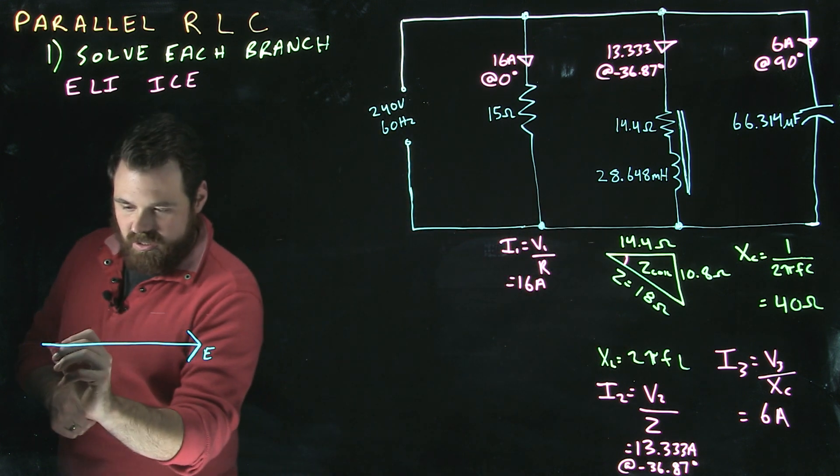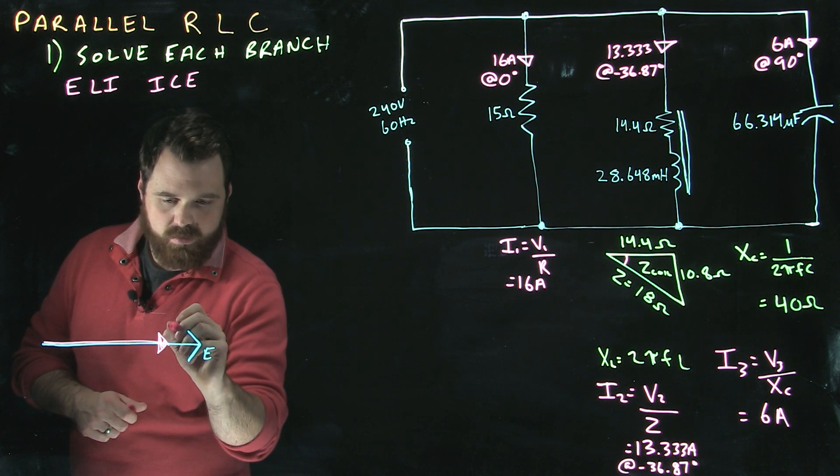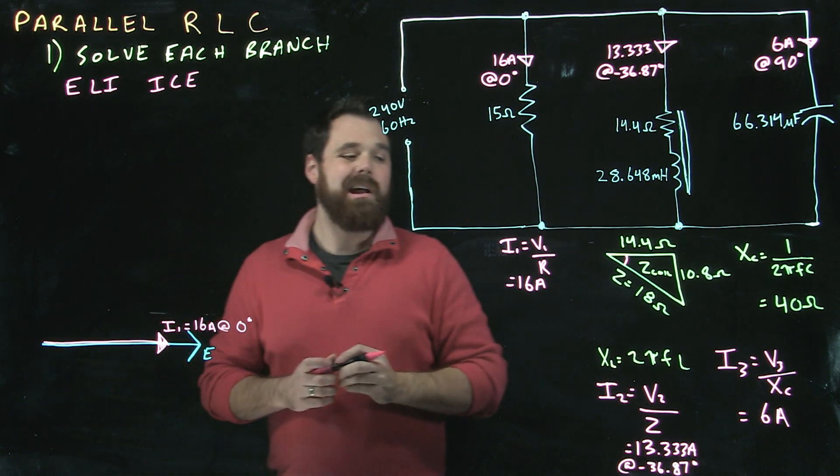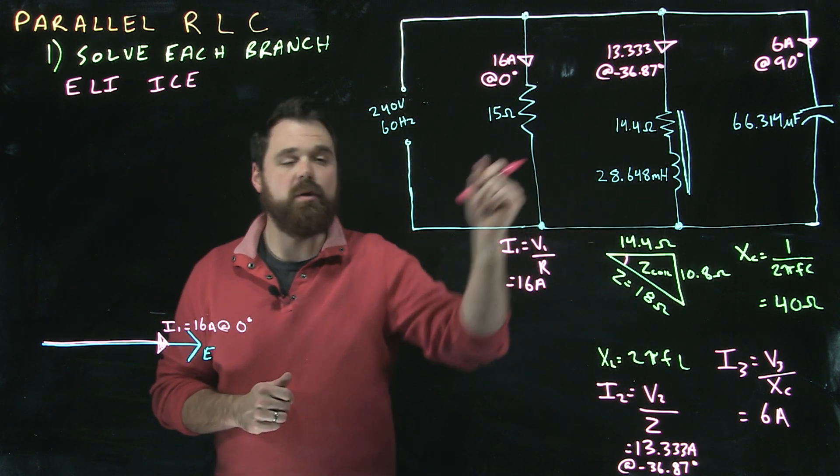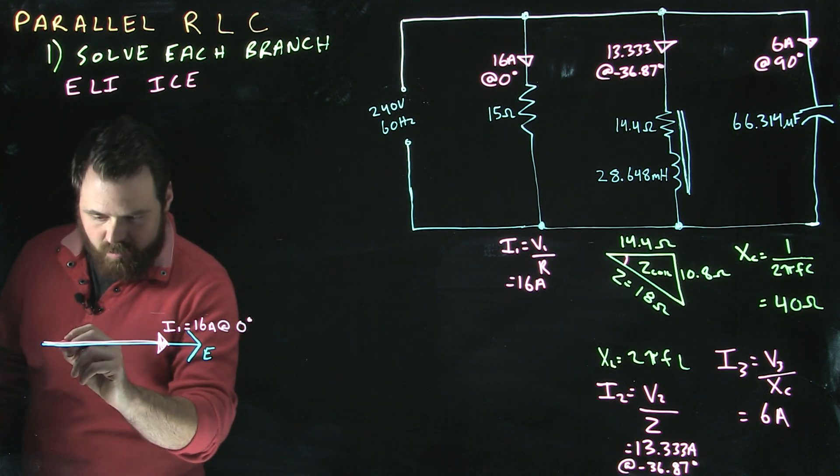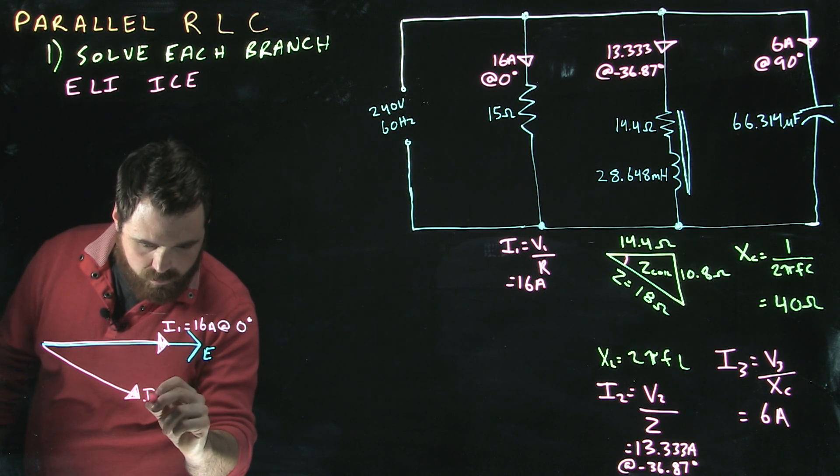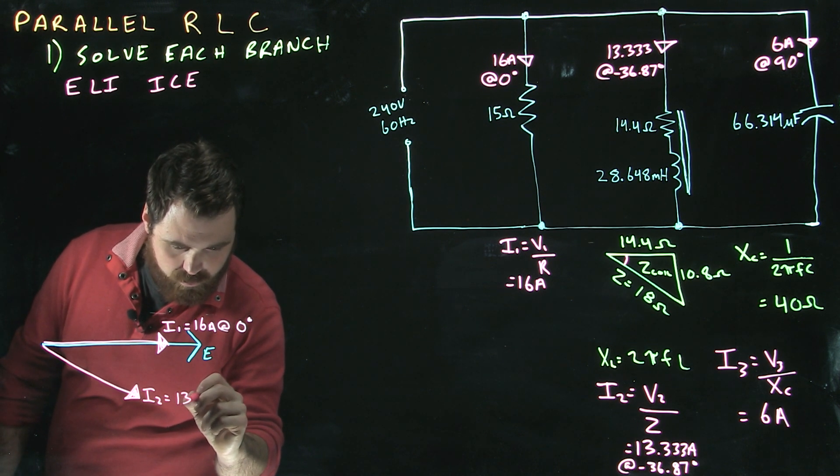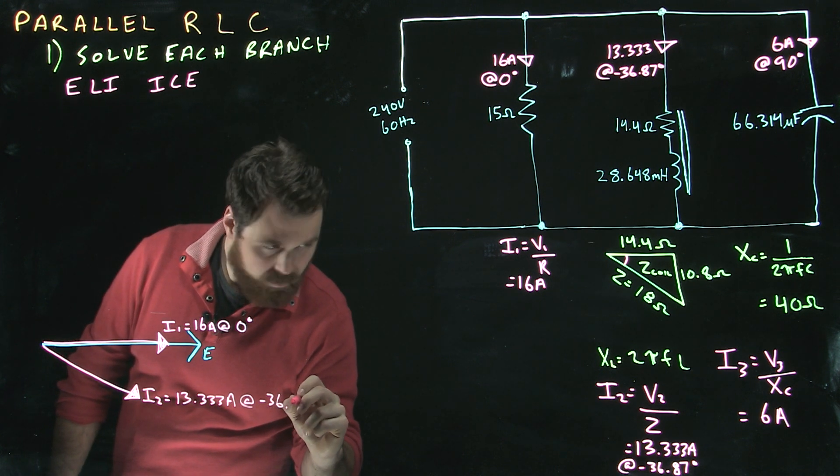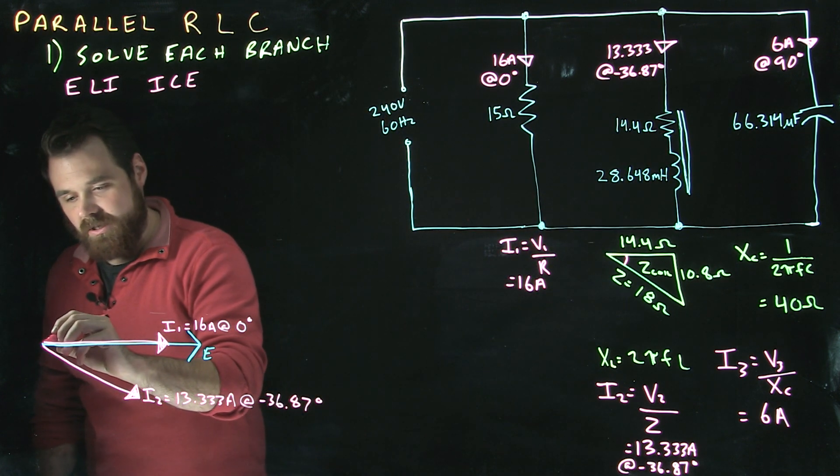I1 is going to be at 16 amps, and it's going to be in phase. I2 is going to be the current flowing through our inductor, which we said is 13.333 amps at negative 36.87. And finally, our third current is 6 amps at positive 90 degrees.